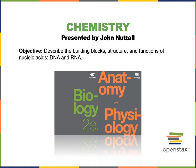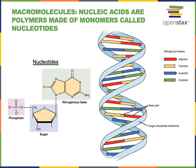In this video I will describe the building blocks, structure, and functions of nucleic acids, DNA and RNA. Nucleic acids are polymers made of monomers called nucleotides. In the illustration on the left, we can see the basic structure of a nucleotide that has a phosphate region, a pentose sugar, and a nitrogenous base. Those three regions are all part of the one monomer of a nucleotide.